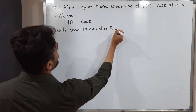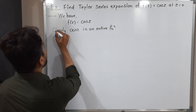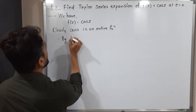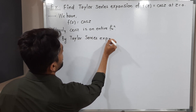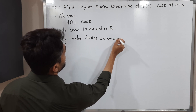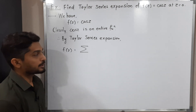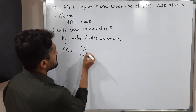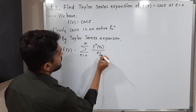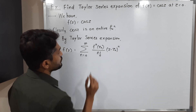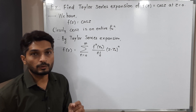Since it is an entire function, we can definitely find its Taylor series. By Taylor series expansion, we can write f(z) as the general form: summation from n = 0 to infinity of the nth derivative of f at z₀, upon n factorial, times (z − z₀) raised to n. This is the Taylor series expansion at the point z = z₀.